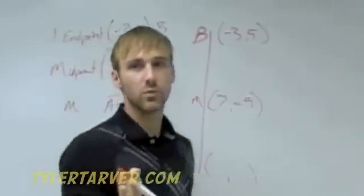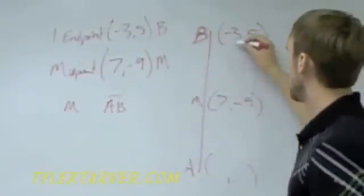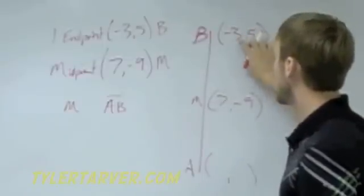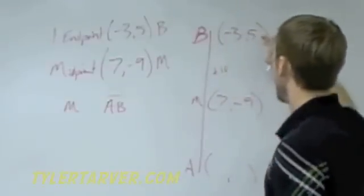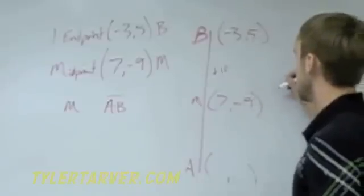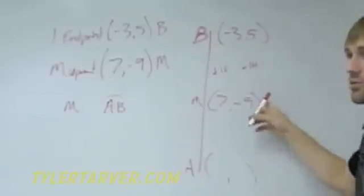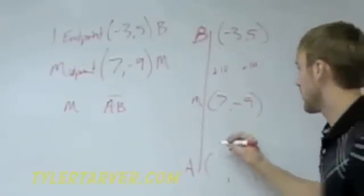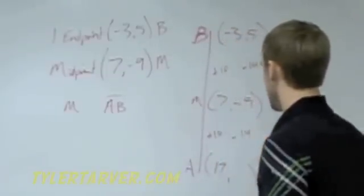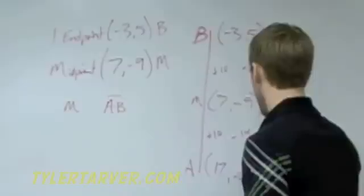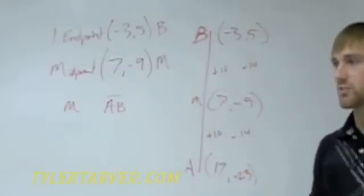Now, to find it, there's an easy way to do it. You just look at the X's. From our end point we know to the midpoint. What's the change from negative 3 to 7? What do you do to negative 3 to get it to 7? You would add 10. Now, what do you do from 5 to get to negative 9? You would subtract 14. If that's what you do to get to the middle, you're going to do the exact same thing to get to the other end. We add 10 to 7. 17. Subtract 14. From negative 9, we get negative 23. That's our point. That's all you've got to do.